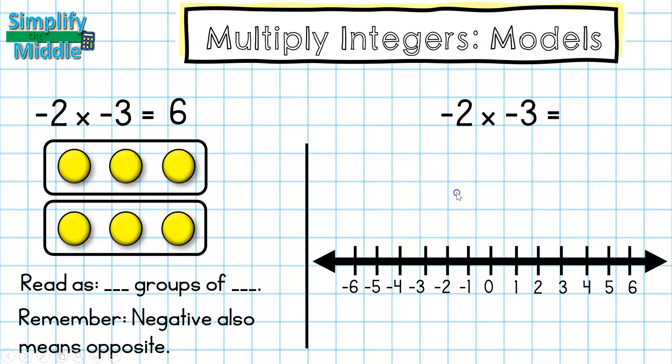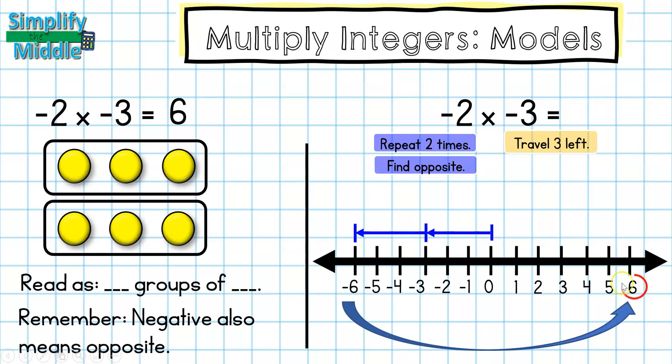On my number line, I am going to travel 3 to the left. I'm going to repeat that two times. And that lands me at negative 6. But I'm not done. I still have to find the opposite. So I'm going to find the opposite just by moving the opposite direction. And my answer is positive 6 here as well.